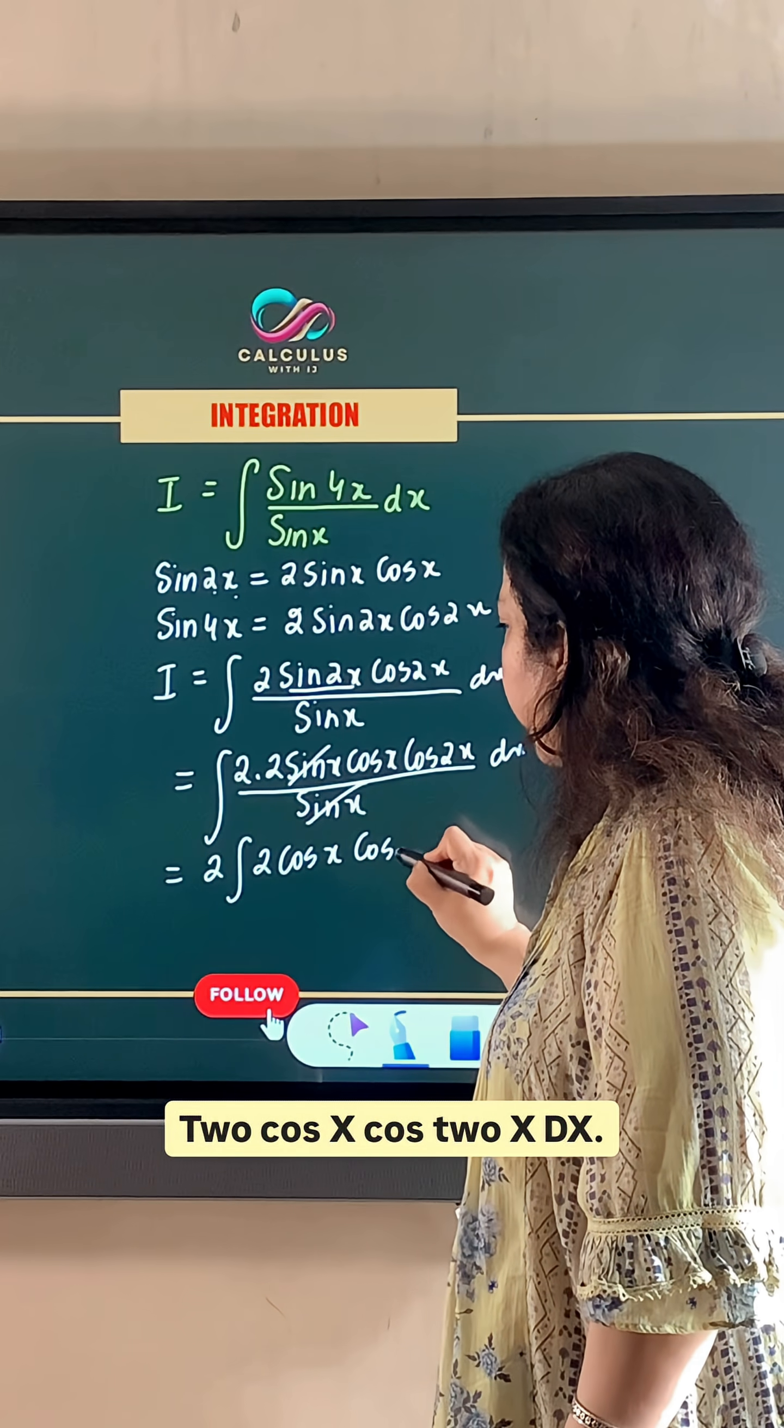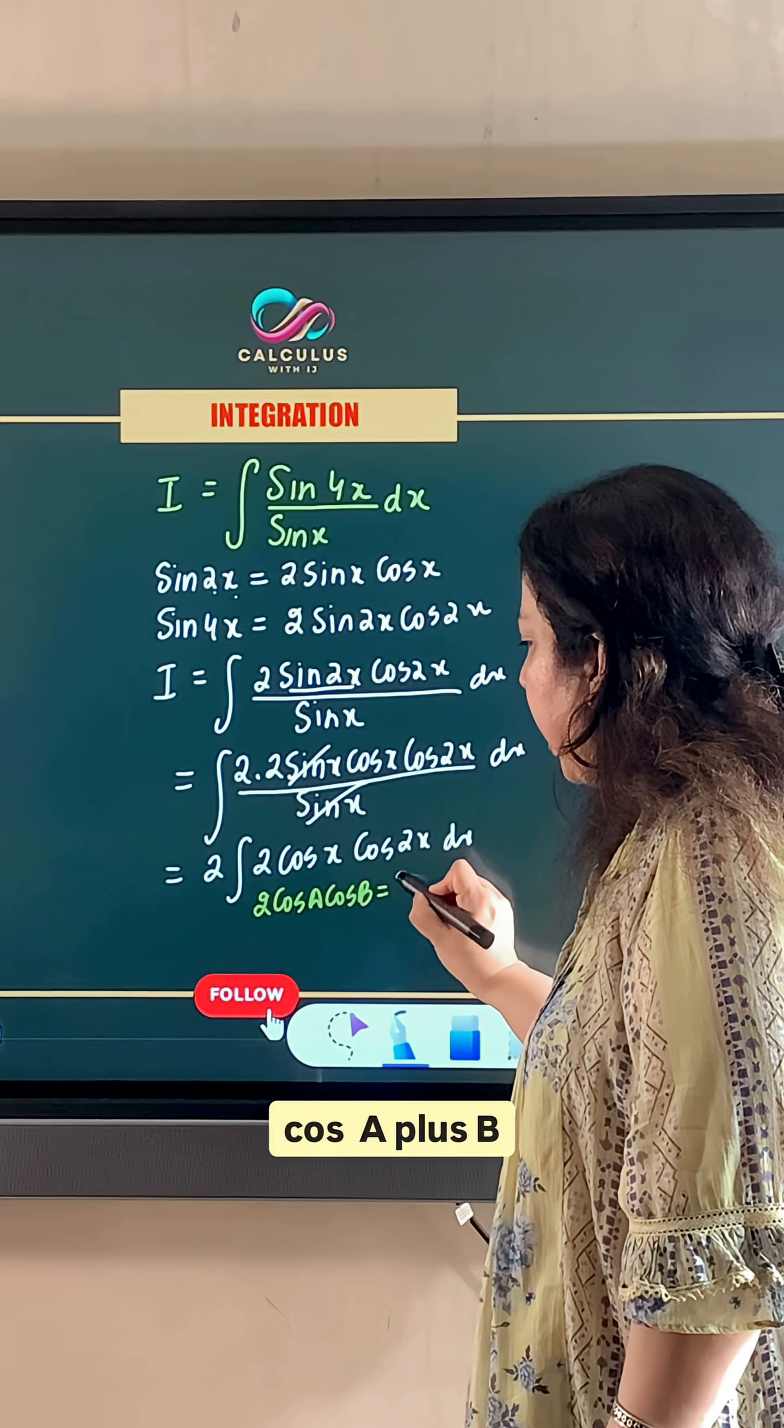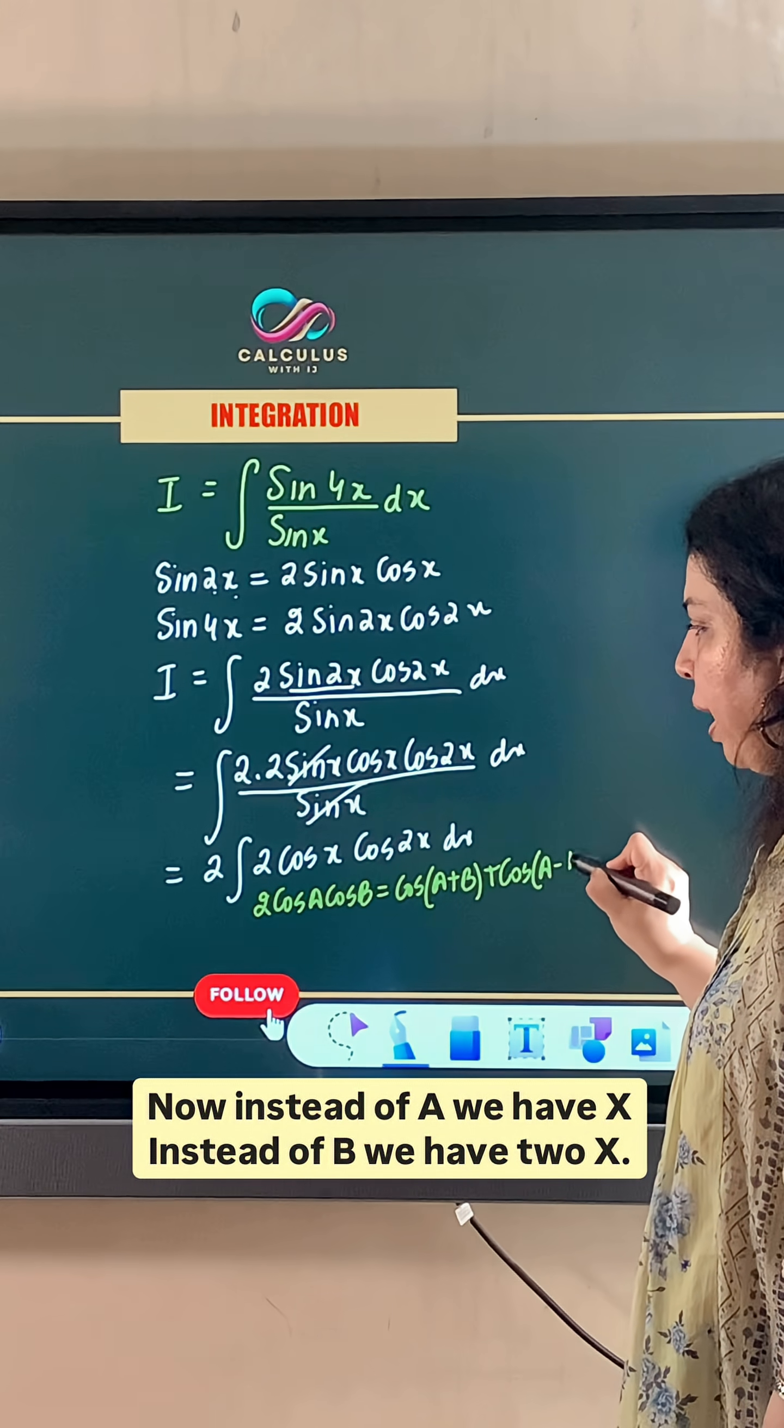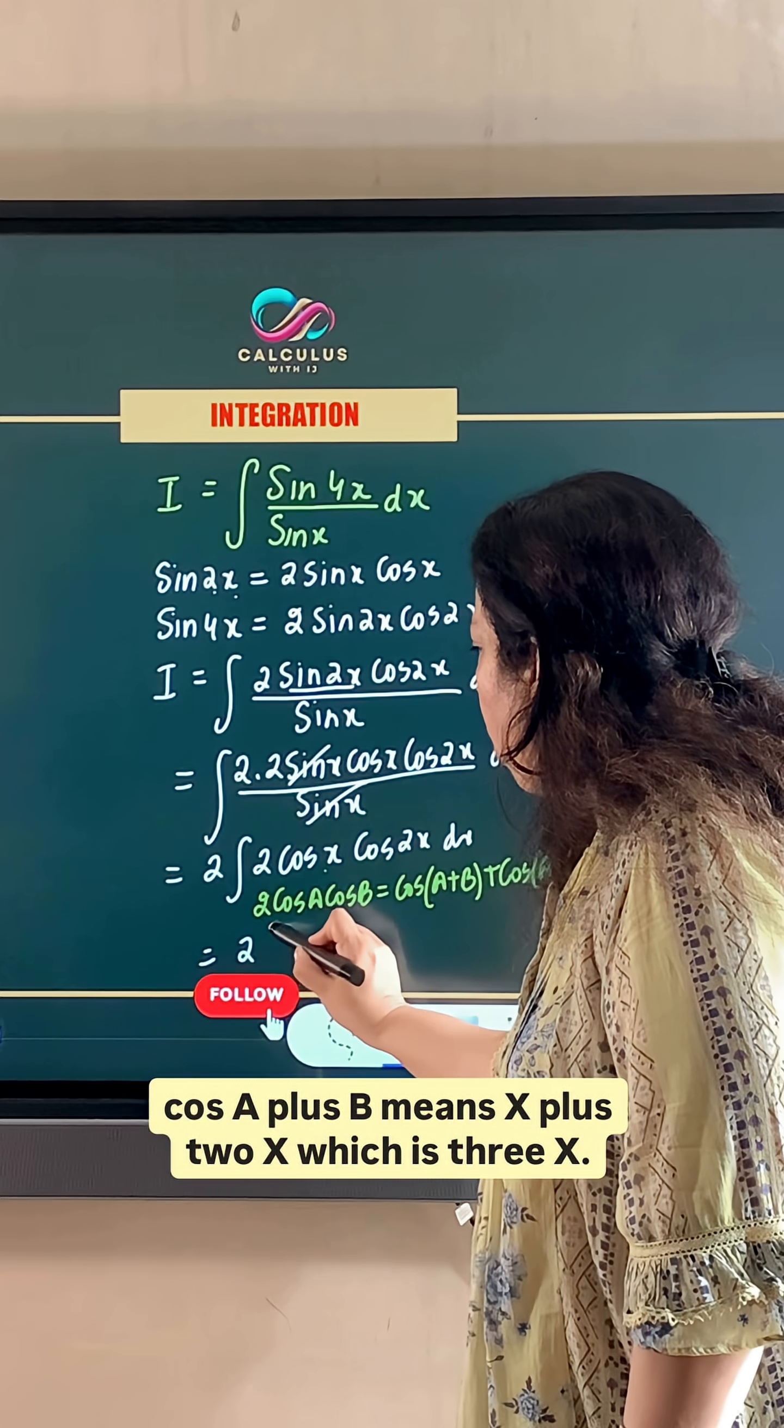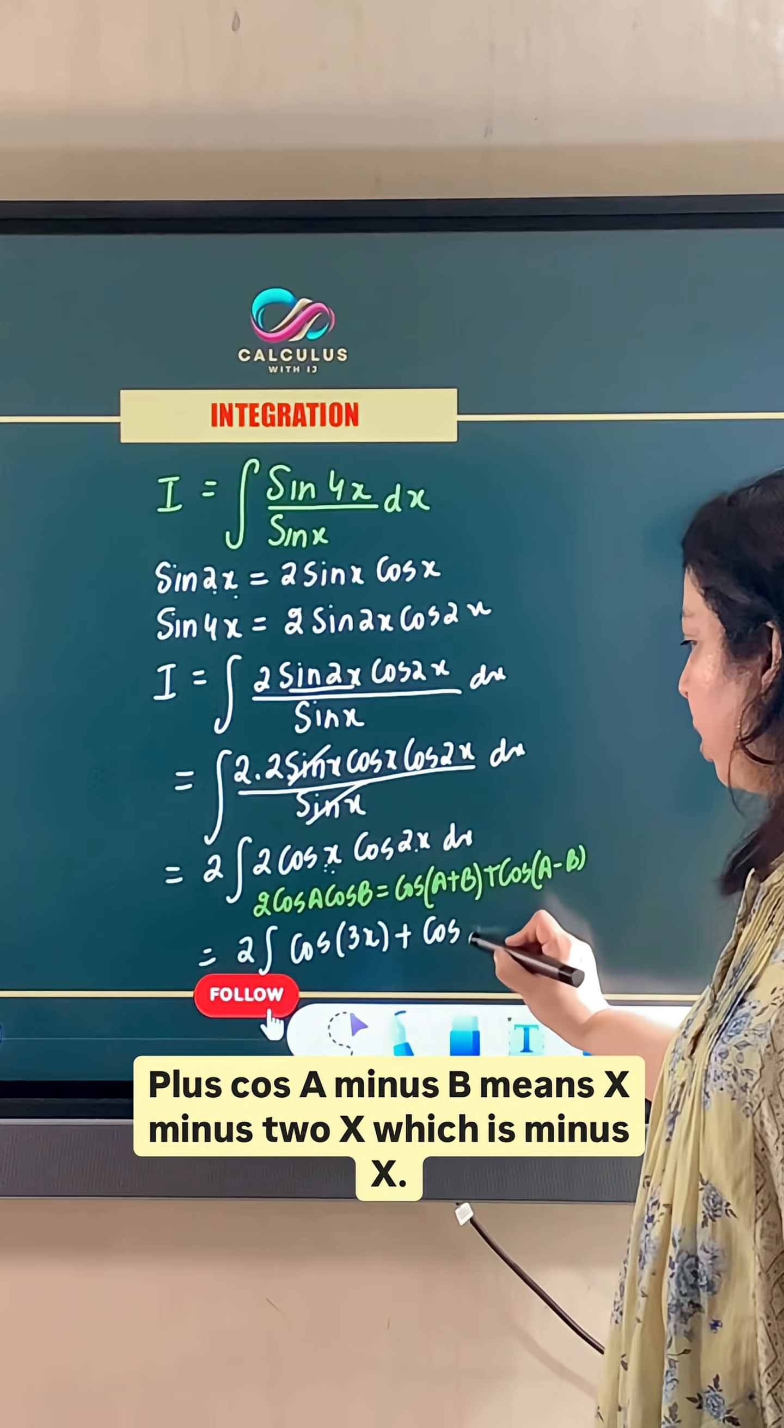Now, we have 1 identity of 2 cos a cos b. 2 cos a cos b is cos a plus b plus cos a minus b. Now, instead of a, we have x. And instead of b, we have 2x. So when we apply this identity, we get cos a plus b means x plus 2x, which is 3x. Plus cos a minus b means x minus 2x, which is minus x.